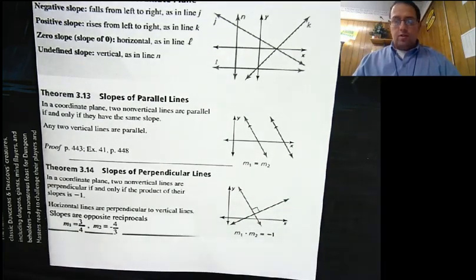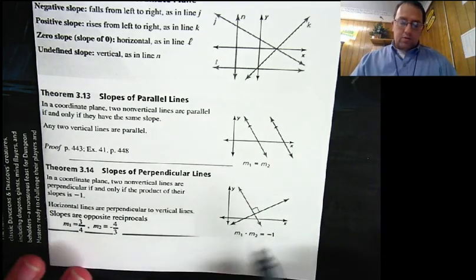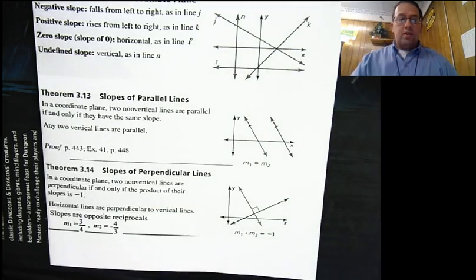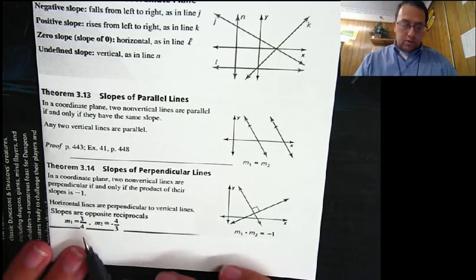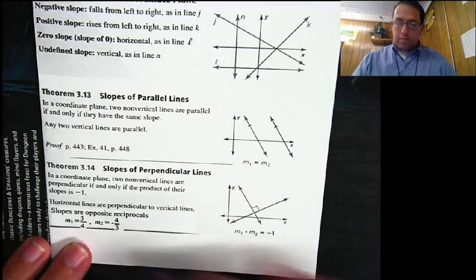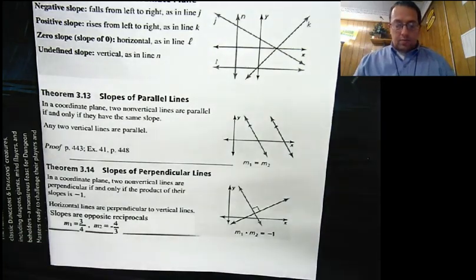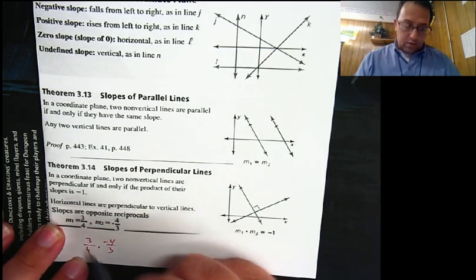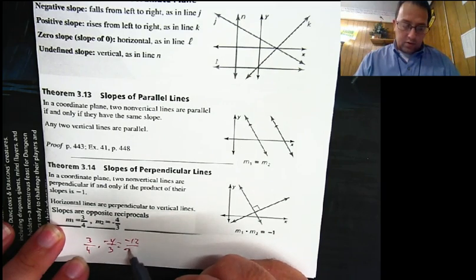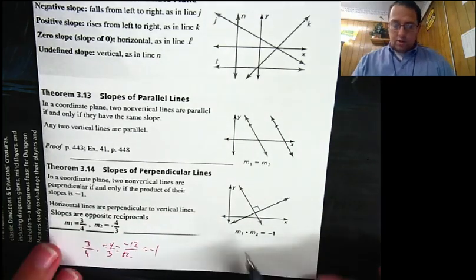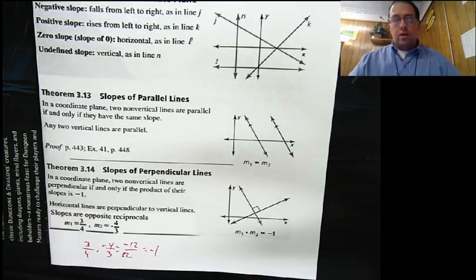Slopes of perpendicular lines: if your lines are perpendicular, then any two non-vertical lines are perpendicular if and only if the product of the slopes is negative one. Or the way you probably learned it, if the slopes are opposite reciprocals. For example, the slope of line one might be 3 over 4, and the other one would be negative 4 over 3. If you multiply those out, you get 3/4 times negative 4/3, which gives you negative 12 over 12, which is negative one.